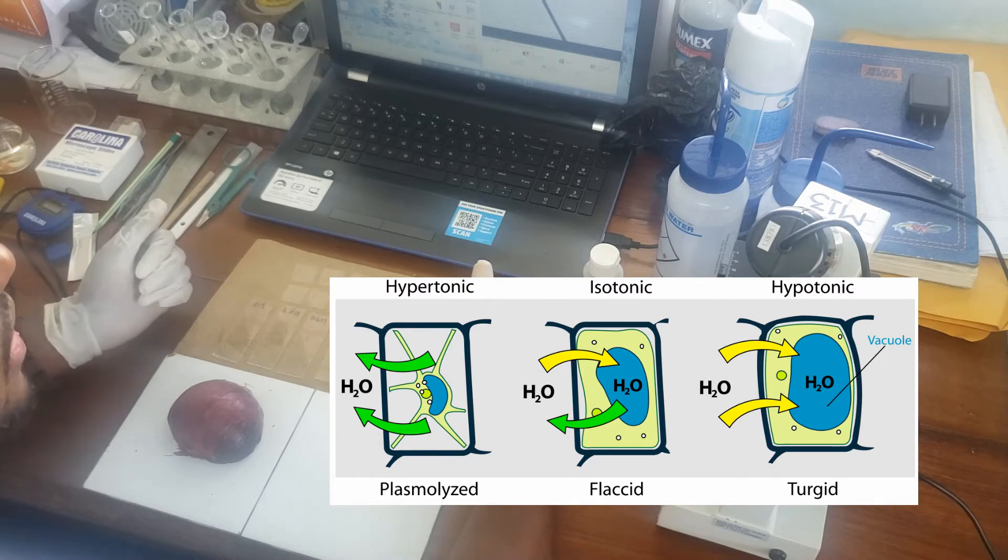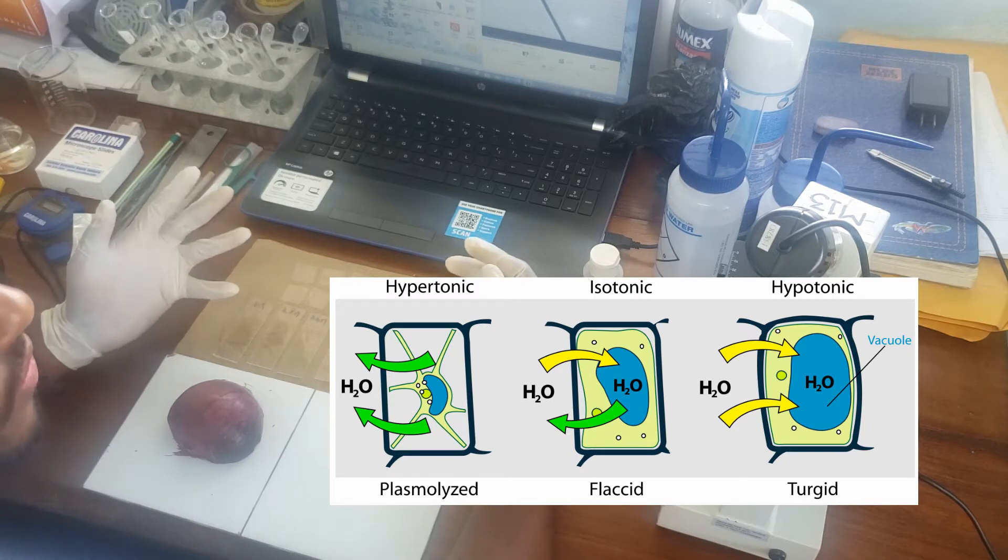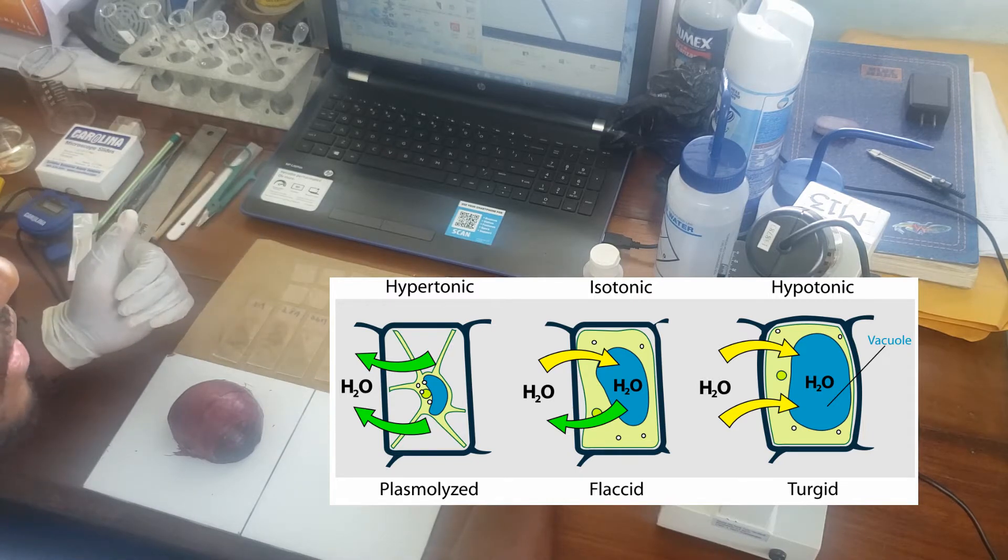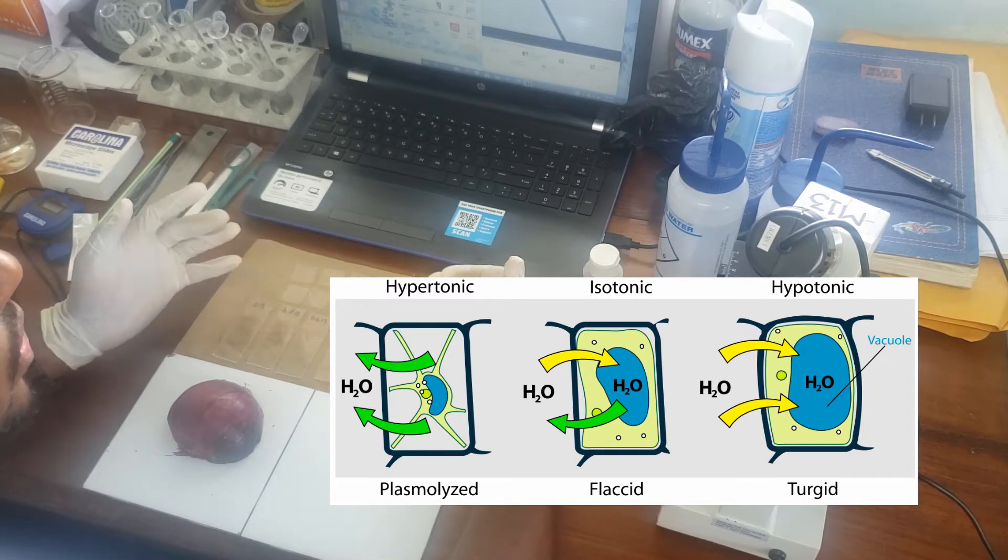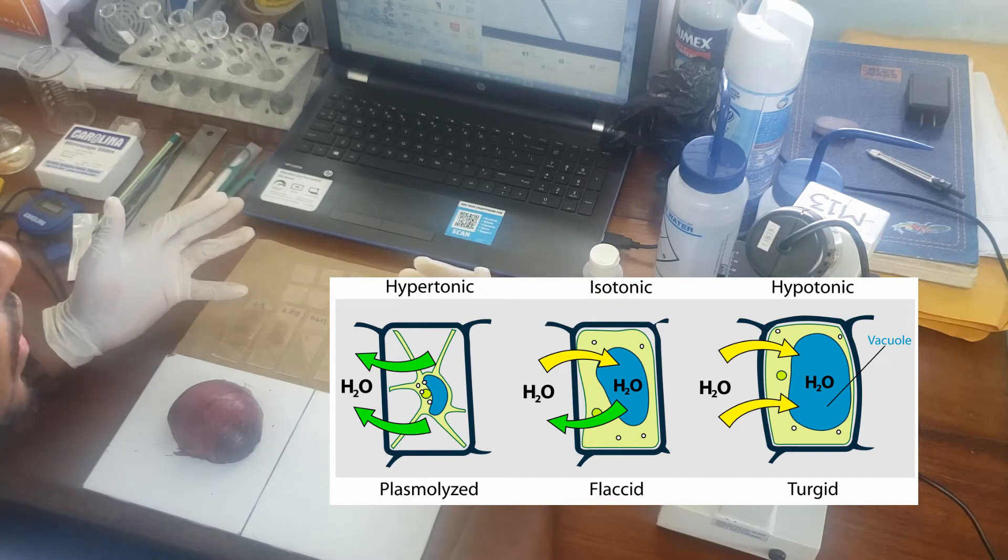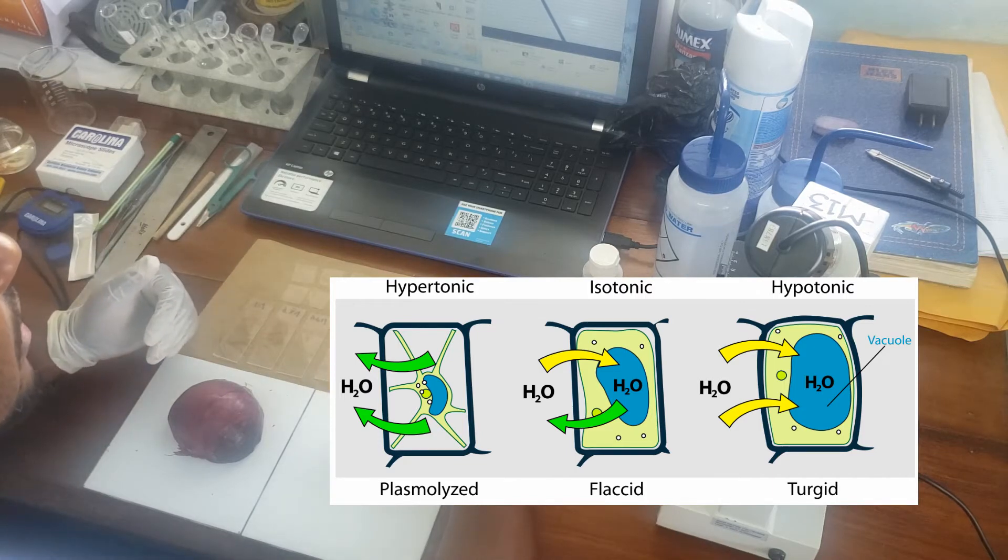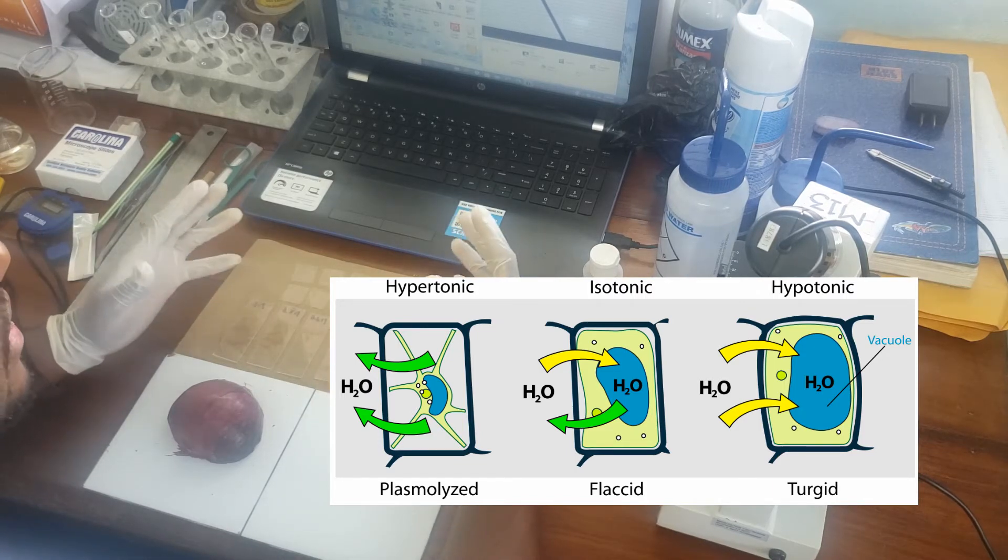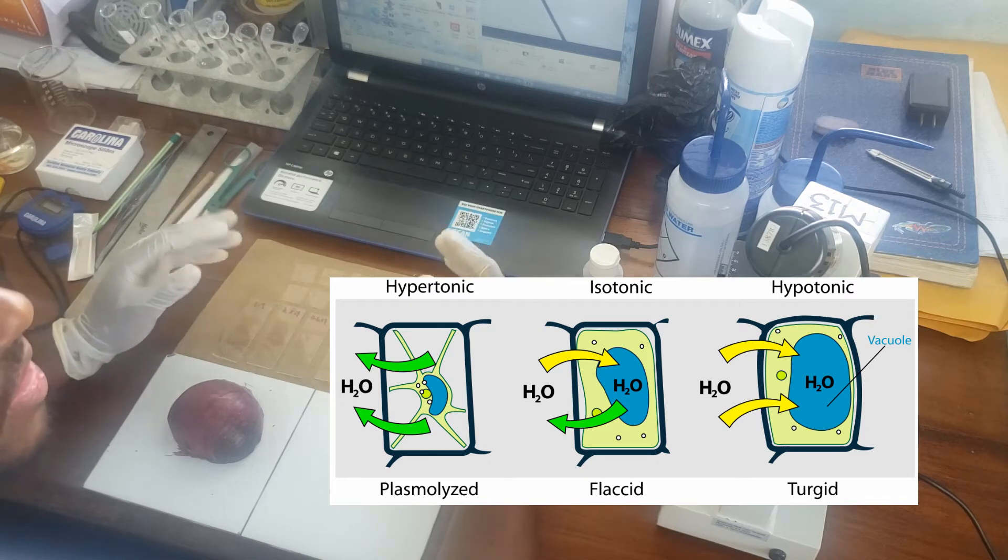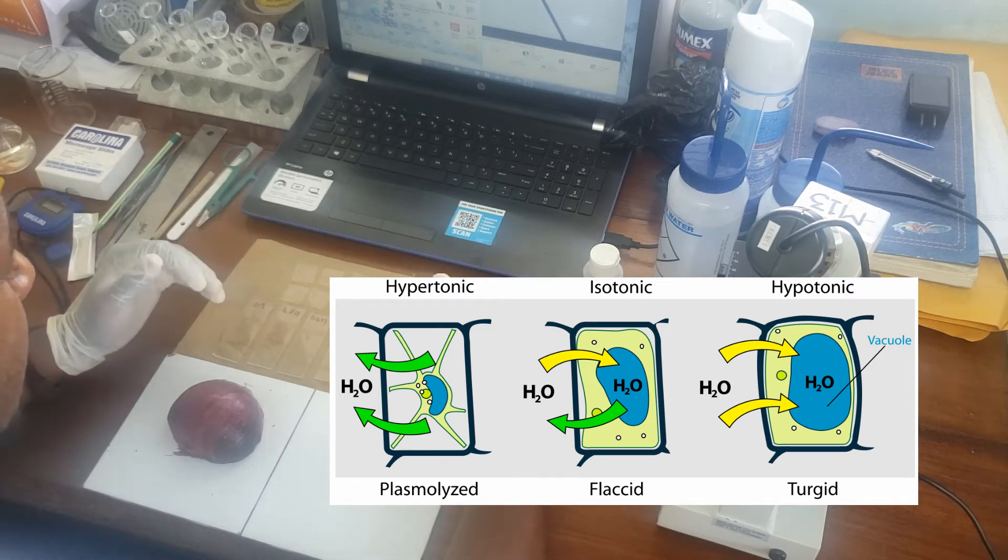And then the final one is a hypertonic solution where the concentration of solute is higher outside than inside the cell. So in that case the cell will lose water and that is where we have plasmolysis. We expect to see in some of these slides where the cell plasma membrane itself will shrink away from the cell wall due to water being lost from the cell.